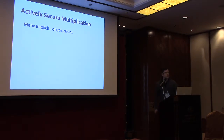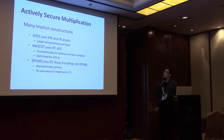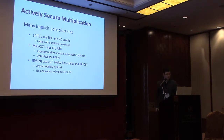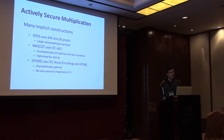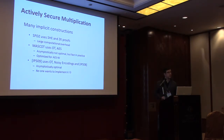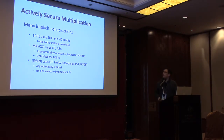There are many implicit constructions of such secure multiplication. For instance, SPDZ uses somewhat homomorphic encryption and zero-knowledge proofs, but has comparatively large computational overhead. MASCOT uses oblivious transfer and AES. The whole protocol is optimized to work with AES-NI instructions, and although the construction is not asymptotically optimal in the number of OTs used per multiplication, the protocol is very fast in practice.